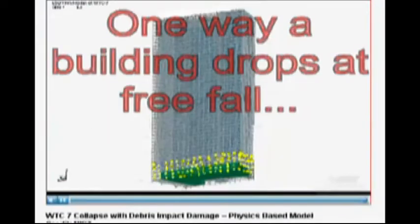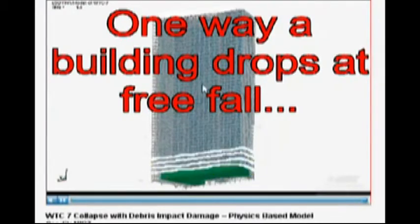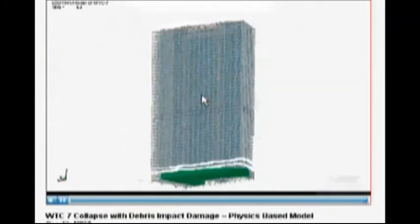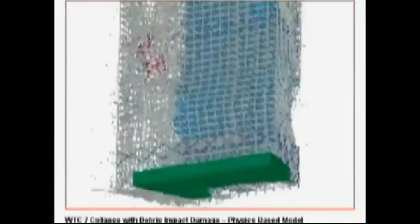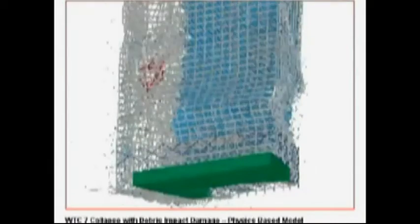The only way an object can drop to the ground at free fall acceleration is if all of the gravitational potential energy is converted to kinetic energy. If some of the gravitational potential energy is used to do other work, such as crushing steel, then the object cannot drop at free fall acceleration.